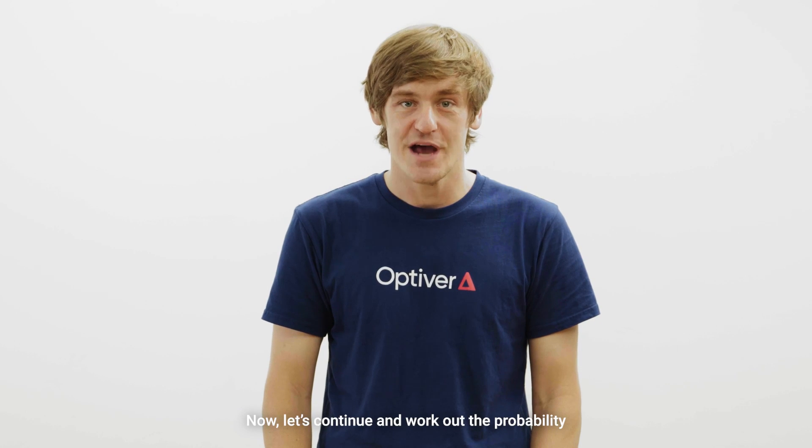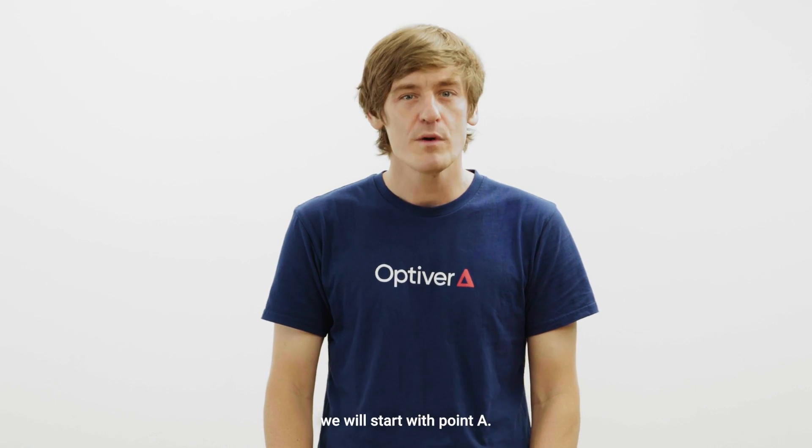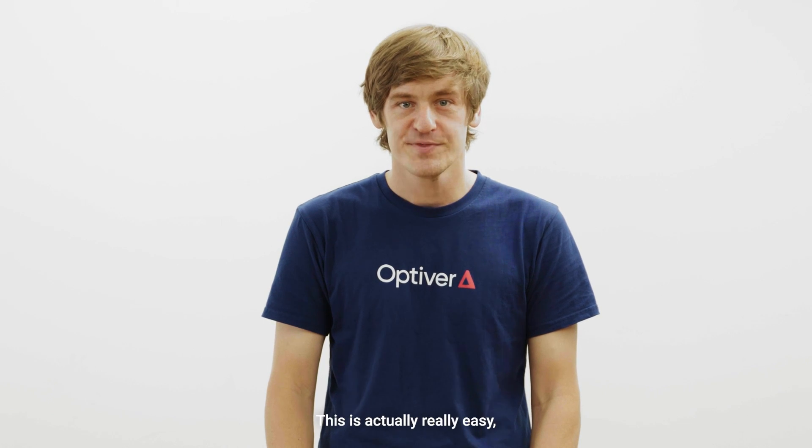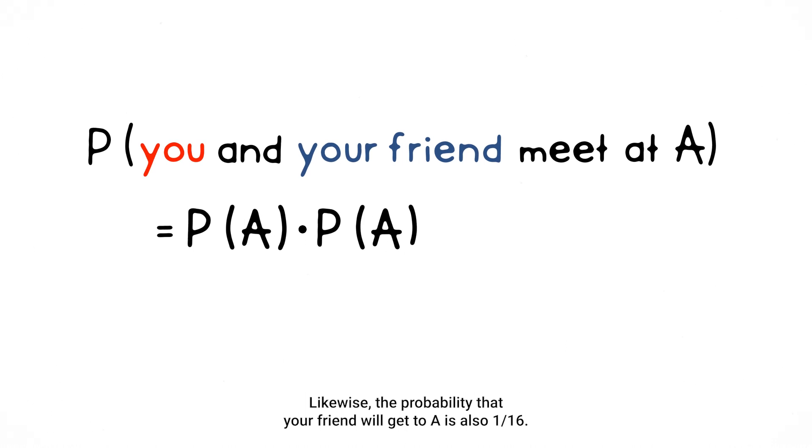Now, let's continue and work out the probability that you and your friend meet up. We will start with point A. This is actually really easy, due to the fact that we know the probability that you will get to A is 1 on 16. Likewise, the probability that your friend will get to A is also 1 on 16. As your paths are independent, the probability that you will meet at A is 1 on 16 times 1 on 16, which is 1 on 256.